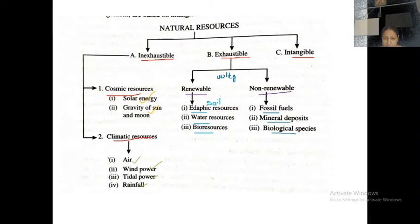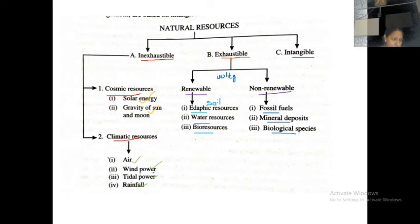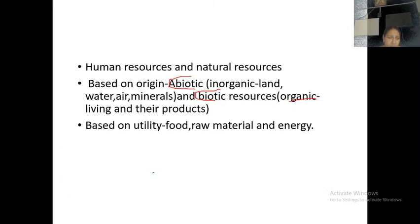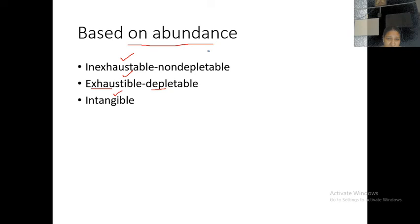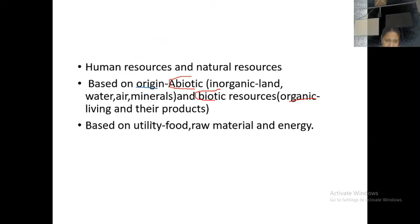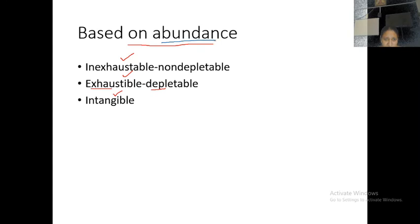So, under the inexhaustible category you can see cosmic resources and climatic resources. These are the classifications of natural resources — one, based upon their origin; two, based upon their utility; and three, based upon their continuous utility, that is exhaustible and inexhaustible, which also comes under based upon their availability or abundance.